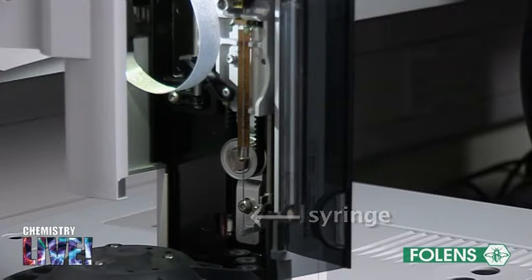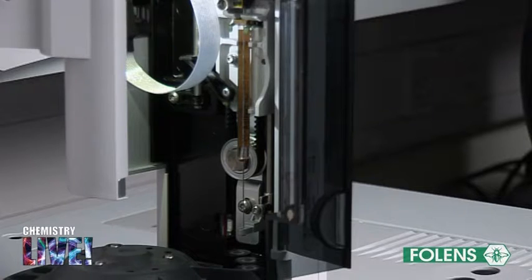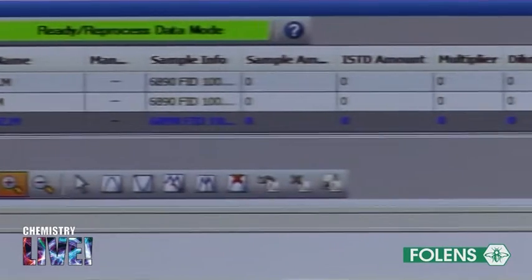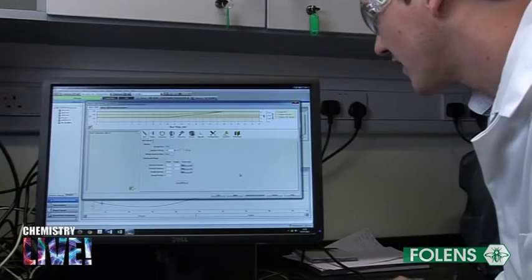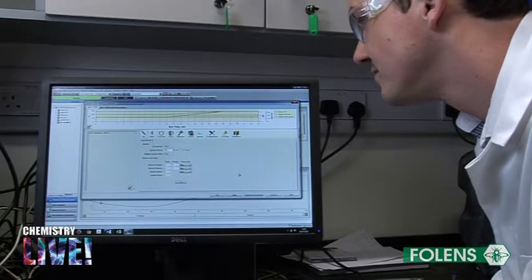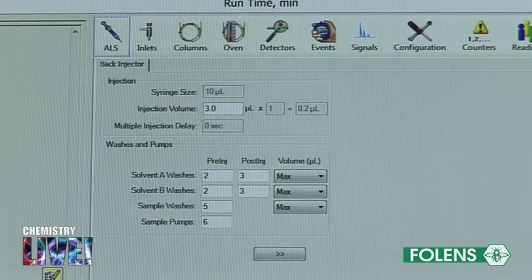It is then injected into the hot column using a syringe. In practice this syringe is automatically controlled by the software on the computer. The volume of sample injected into the instrument can be controlled by the computer. Typically the volume is between 1 and 10 microlitres.